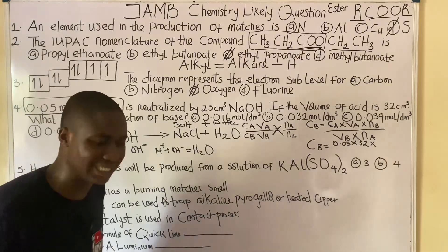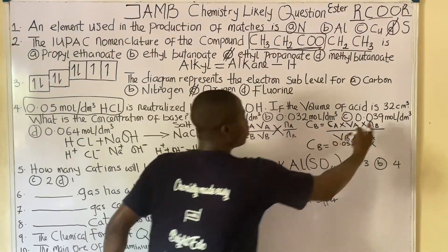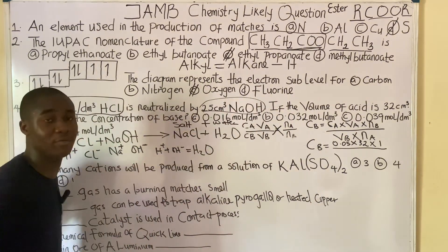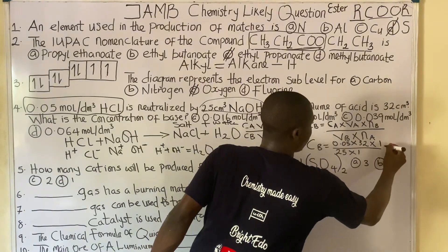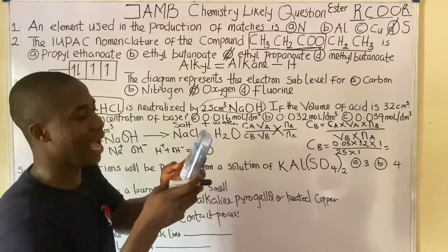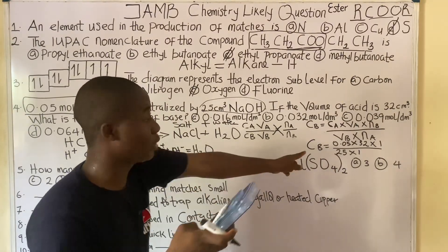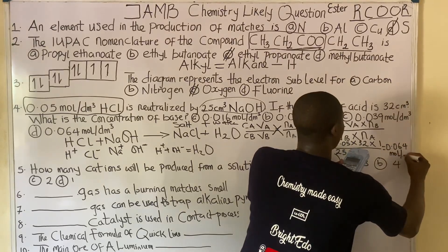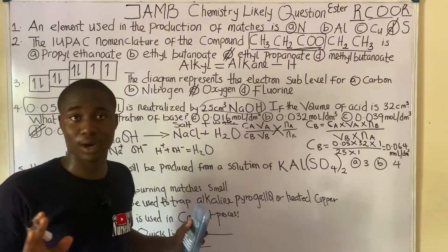So we have Cb = (0.05 × 32 × 1) / (25 × 1) = 1.6 / 25 = 0.064 mol/dm³. The concentration of the base is 0.064 mol/dm³. Checking the options, option D is the answer. Very easy — no stress.